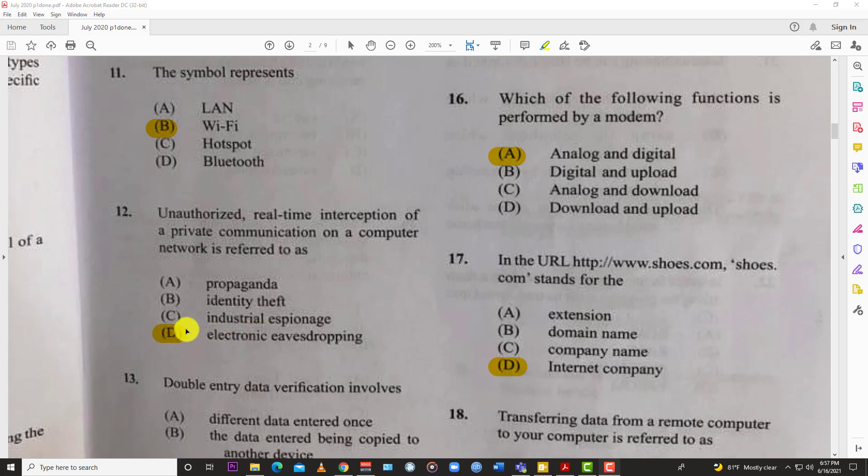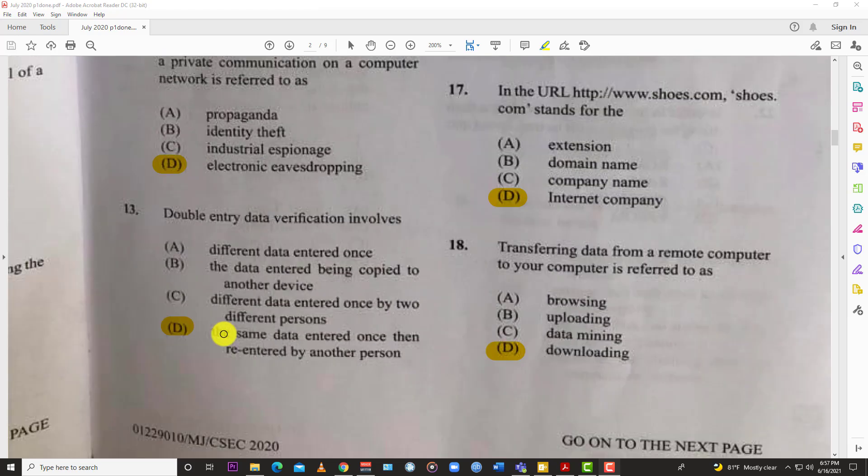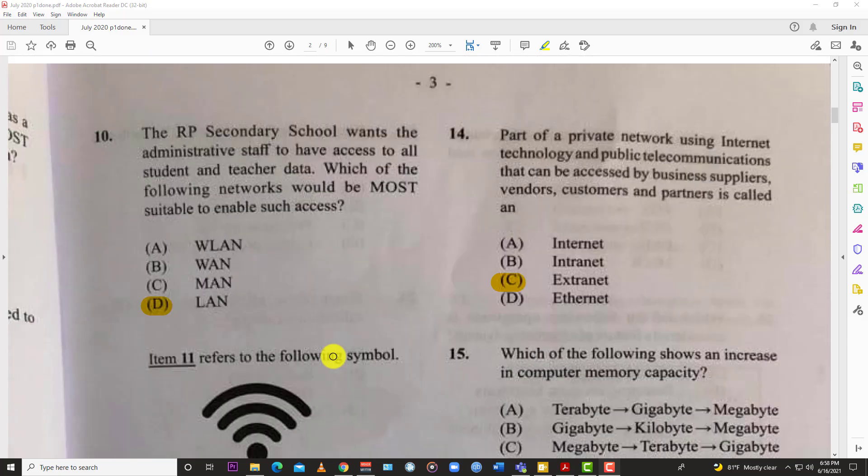Number thirteen: double entry data verification involves - the best answer is D, the same data entered once then reentered by another person. It's just as the name said, double entry. Self-explanatory.